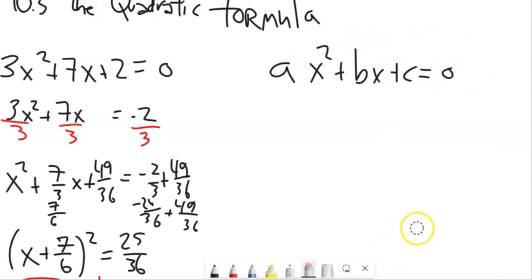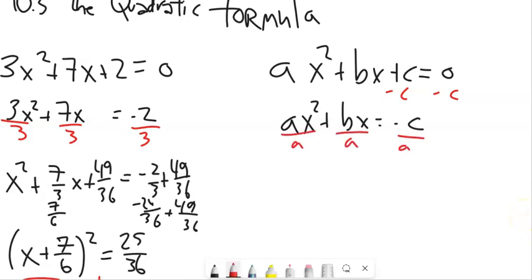So what we can do is we can generalize it for this, and at the end, we'll have a formula that encapsulates all this work. So we'll do that. Subtract C from both sides. And then notice over here, we divided everything by 3, so let's divide everything by A. So we end up with x squared plus B over Ax equals negative C over A. That was this part, this part, and this part, and then we completed the square.